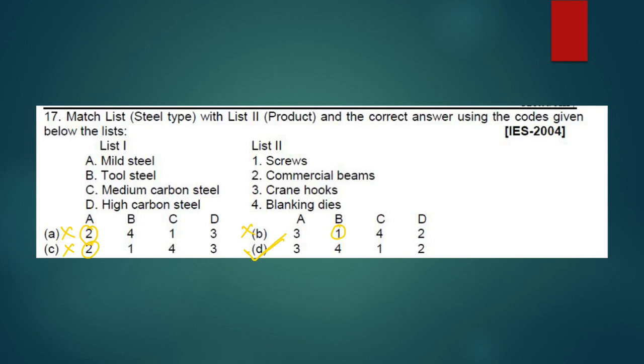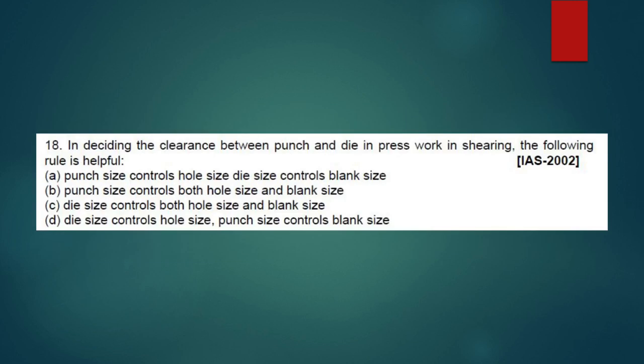In descending the clearance between punch and die in press work in shearing, the following rule is helpful. Punch and die in shearing - from option, punch size controls hole size, yes correct. Die size controls blank size. Both are correct, so A is our answer.